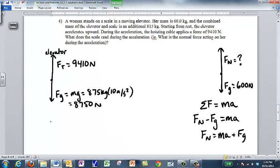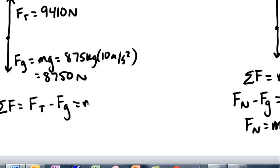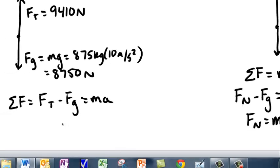So we have the net force acting on the elevator is our FT minus Fg and that equals ma. So we get the 9410 newtons minus 8750 newtons is equal to the mass times acceleration.